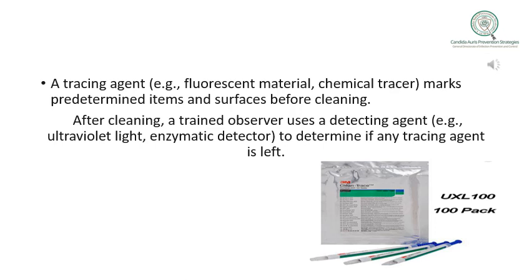Environmental marking uses a tracing agent — a fluorescent material or chemical tracer — to mark predetermined items and surfaces before cleaning activities. After cleaning, a trained observer uses a detecting agent or light such as ultraviolet light or enzymatic detector to determine if any tracing agent remains. Any marking left on the surface after cleaning indicates that the cleaning and disinfection was not appropriately implemented.